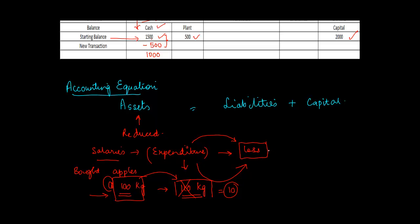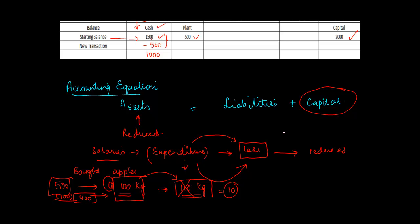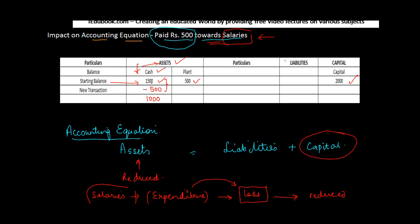Whenever there is a loss, the capital contributed by the person is reduced. For example, if I had 500 rupees and spent 100 on apples and got nothing back because they went rotten, my money reduces from 500 to 400. Similarly, when you incur a loss, capital is reduced by the amount of expenditure. In this case the expenditure is 500 rupees, so capital reduces by 500 — from 2000 to 1500.